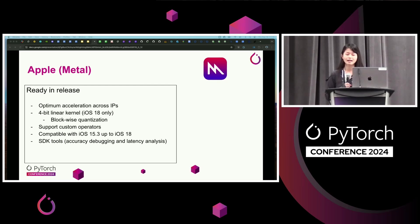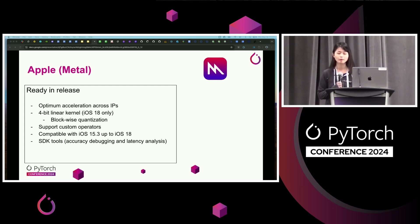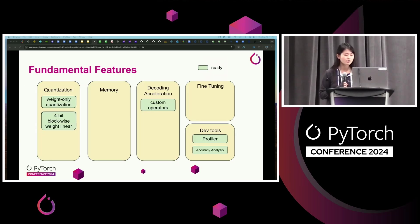Metal is a low-level, low-overhead hardware-accelerated API created by Apple, designed and optimized for Apple platforms. It also provides optimum access across IPs. At the recent WWDC, Metal announced the 4-bit linear kernel, and it is now also available in ExecuTorch. Custom operators is a bit unique here and provides more flexibility to users. The Metal library is compatible with a wide range of OS versions. Dev tools are also integrated. As we can see, Metal hits quantization, decoding acceleration, and dev tools.